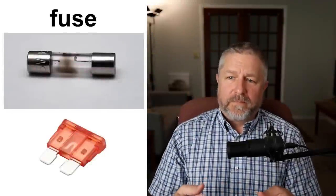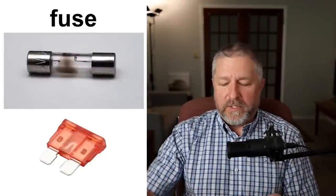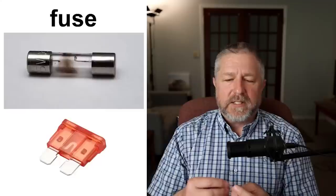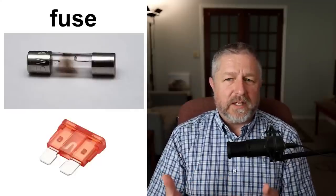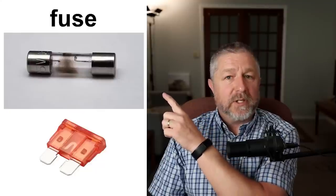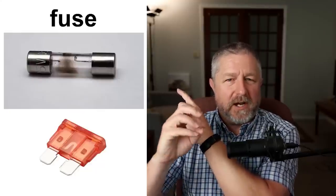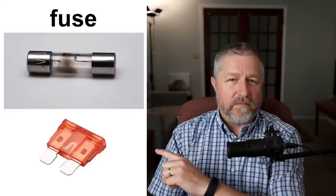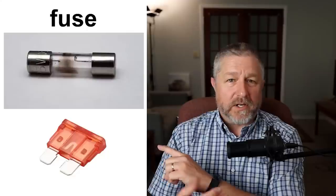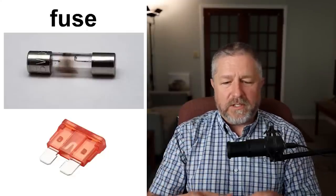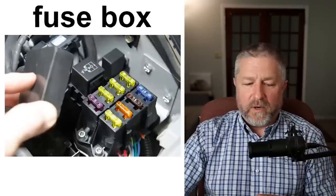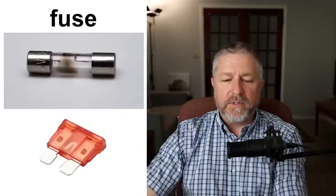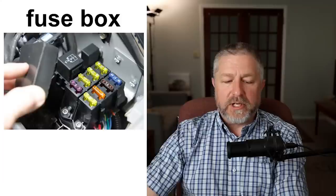When you have electricity, you have to protect things from getting overloaded. The way we do that is by using something called a fuse or a breaker. This fuse has actually blown — you can see the dark inside because the tiny wire in the fuse burnt when the system was overloaded. On a car, if your headlights or signal lights don't work, you need to check the fuse box to see if one of the fuses has blown. When a fuse is overloaded, it blows and needs to be checked.